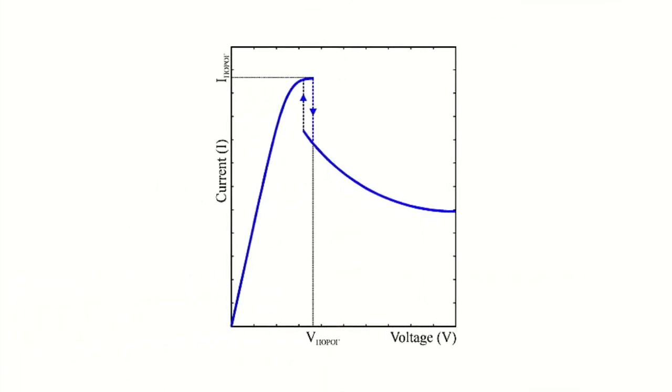At the moment of domain nucleation, the diode current is maximal. As the domain forms, the current decreases and reaches its minimum at the end of formation. Reaching the anode, the domain crashes and the current increases again. As soon as it reaches the maximum, a new domain is formed at the cathode. The frequency of repetition of this process is inversely proportional to the semiconductor layer thickness and is called the transit time frequency.